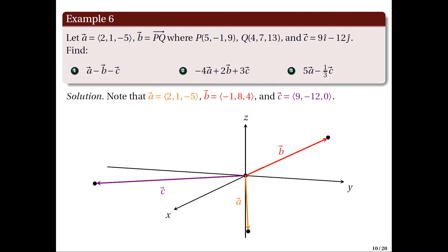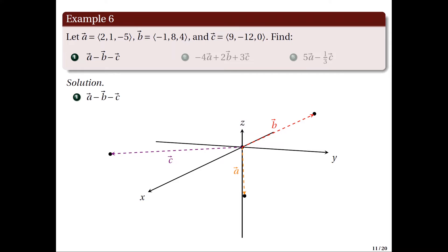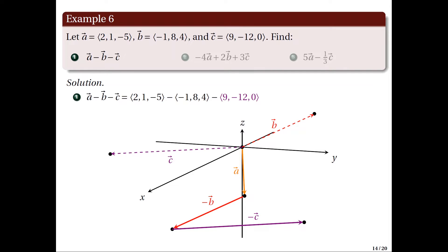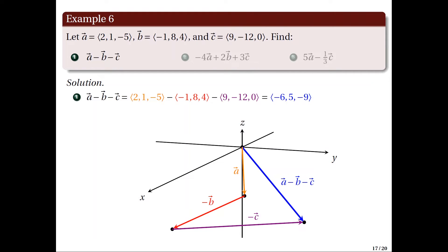The figure illustrates the position representations of the three vectors in three-dimensional space. For item 1, we find A − B − C = (2, 1, −5) − (−1, 8, 4) − (9, −12, 0). Performing component-wise subtraction: (2−(−1)−9, 1−8−(−12), −5−4−0) = (−6, 5, −9). Hence, A − B − C = (−6, 5, −9), represented by the blue line segment in the figure.